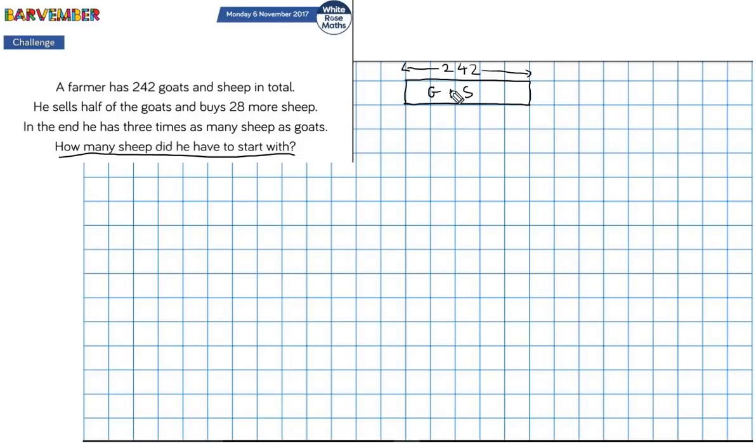So I can't figure out how to mark it so that I'm getting rid of half of the goats and buying more sheep. So this is clearly not going to work. It's not going to help me.